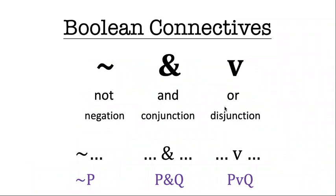They each just stand for a simple word in English. Negation is just the word not. Conjunction is the ampersand, the word and. And disjunction, the symbol for that is the lowercase v, and it stands for the word or.